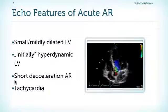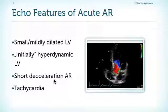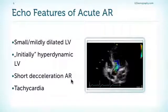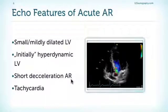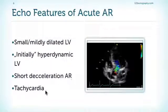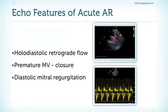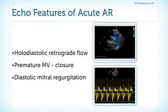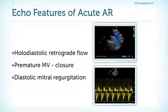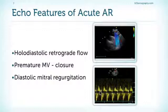A very typical finding is a very short deceleration time of the continuous wave Doppler spectrum of aortic regurgitation. I already mentioned tachycardia. Another finding we frequently see is holodiastolic retrograde flow, just as we see in chronic aortic regurgitation. This is such an example, here in color Doppler and here with the pulse wave Doppler — holodiastolic flow.